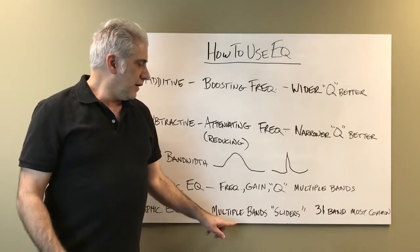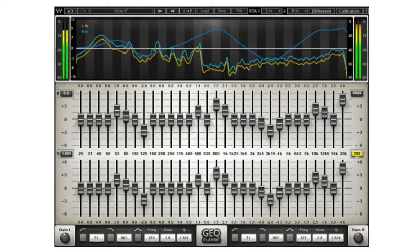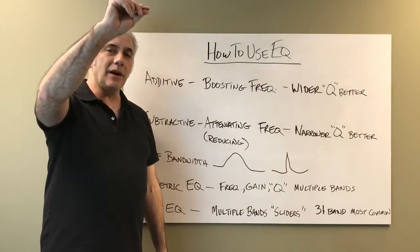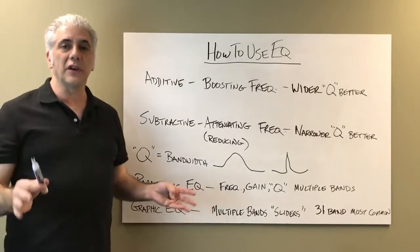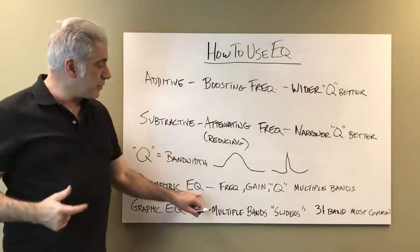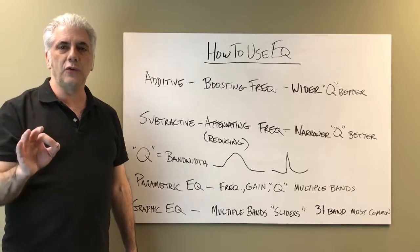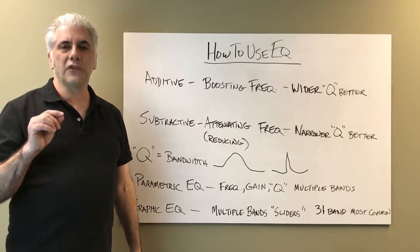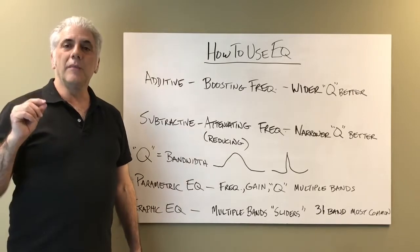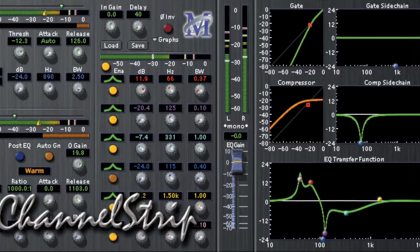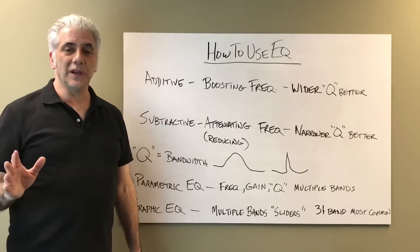Then we have the graphic EQ. Typically they are multiple bands — a 31-band is most common — with sliders going up or down, perhaps plus or minus 6 or 12 dB. Digital ones can go bigger. The parametric EQ range can be really great; the Waves Q10 goes plus or minus 18 dB, and the Metric Halo channel strip EQ goes plus and minus 24 dB — probably the biggest cut and boost of any digital EQ I can think of.